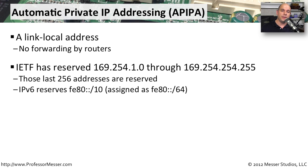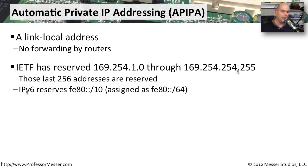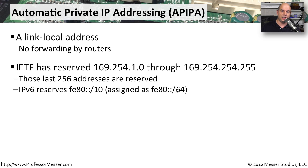The IETF has reserved a range of IPv4 addresses just for link local use: 169.254.1.0 through 169.254.254.255. Note that the last 256 addresses are reserved, so it stops at 254. If you are using an IPv6 network, you have a completely different group of link local addresses that are automatically assigned — those start with FE80 and are almost always written as FE80:: with a slash 64 at the end.